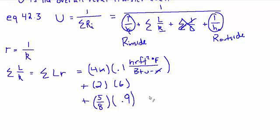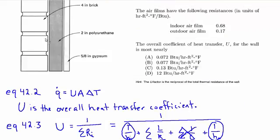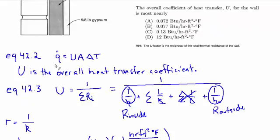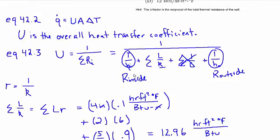And if you multiply and add all those up, you get 12.96 hour foot squared degrees F over BTU, because the inches went away. So that whole thing is the resistance of the components of the wall. The only thing that's not in the denominator then is just the resistance of the inside film and outside film.